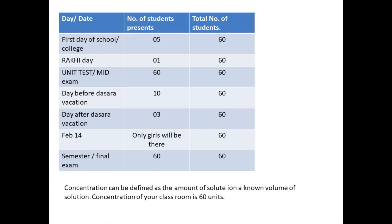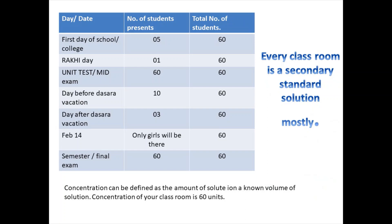So your classroom is a secondary standard solution, because the concentration — that is the number of students in a known volume — is changing. If your classroom were a primary standard solution, on all dates the number of students must be 60, without any absences depending on the environment. Hence, every classroom is mostly a secondary standard solution.